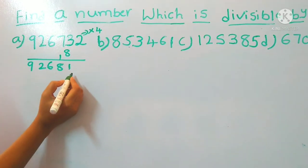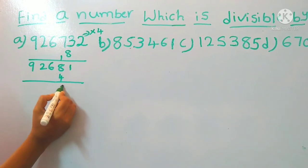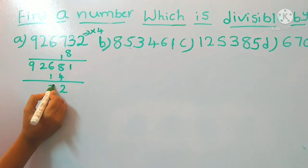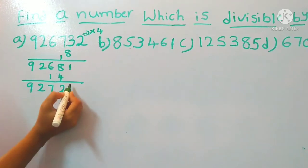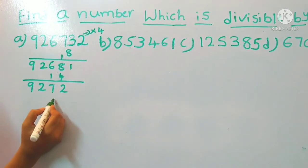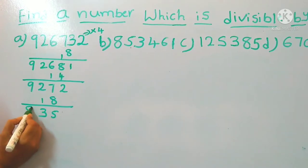Again multiply the last digit with 4, 1 for the 4, so to the 7, 2, 9. Again multiply the last digit with 4, 2 for the 8, so 15, 3, 9.